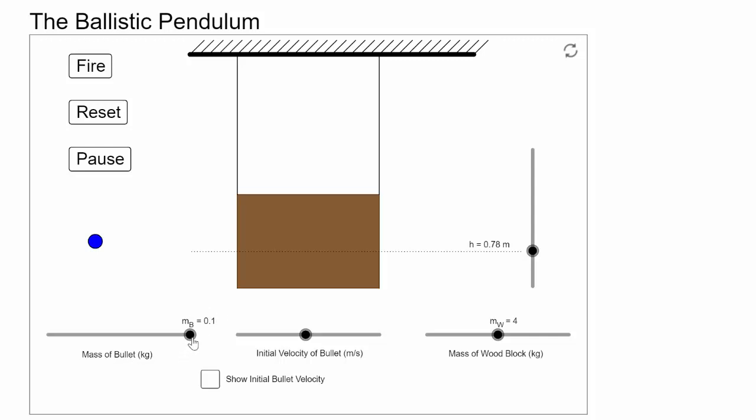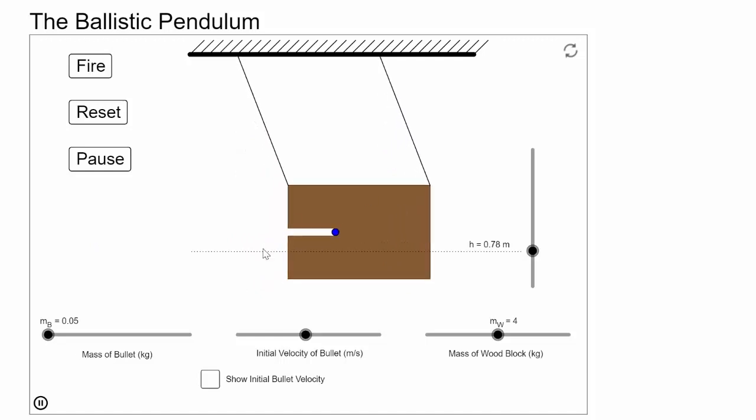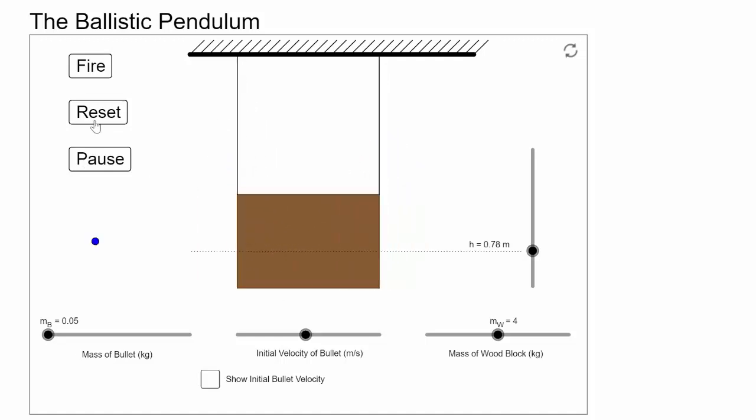So we have a bullet which is 0.1 kilograms, or we can change its mass, and obviously a smaller mass will have a smaller amount of momentum, because mass times velocity, and will cause us to go to a less height.